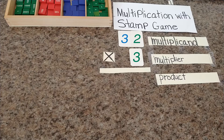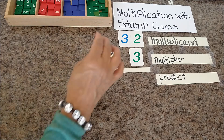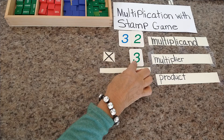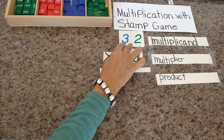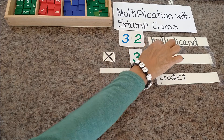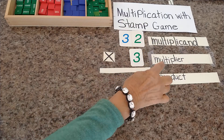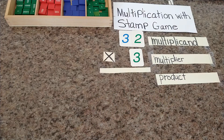Hi everyone, today I'm going to show you multiplication with the stamp game. I have here the math problem 32 multiplied by 3. 32 is our multiplicand and 3 is the multiplier, and the answer will be called the product. So let's get started.